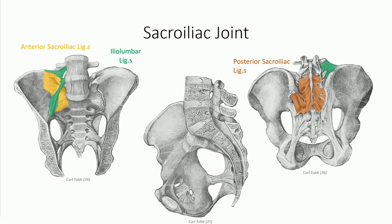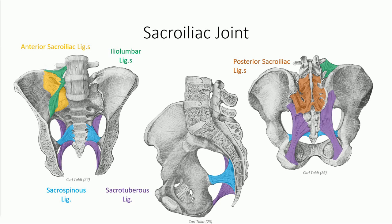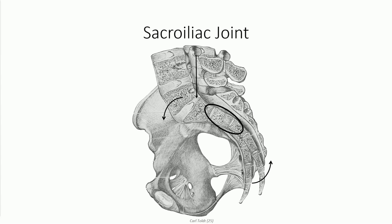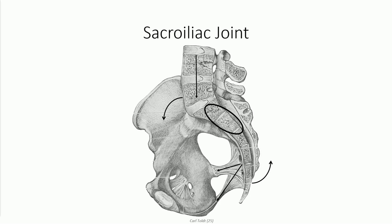Two additional extracapsular ligaments provide further support by preventing anterior rotation of the sacrum on the ilium. The sacrospinous ligament runs from the lateral border of the sacrum to the ischial spine, while the sacrotuberous ligament runs from the posterior surface of the sacrum — where it blends with the posterior sacroiliac ligaments — to the ischial tuberosity, blending with the common hamstring origin. This lateral view shows that the fifth lumbar vertebra, and hence the axial load running through it, is located anterior to the general position of the sacroiliac joints. This would tend to rotate the sacrum anteriorly relative to the ilium, and the sacrospinous and sacrotuberous ligaments anchor the posterior aspect of the sacrum to the inferior aspect of the pelvis to resist this rotational force.